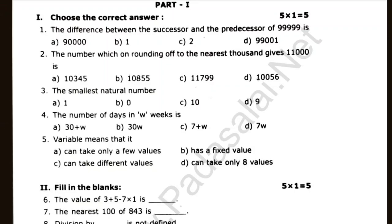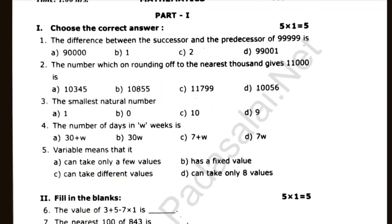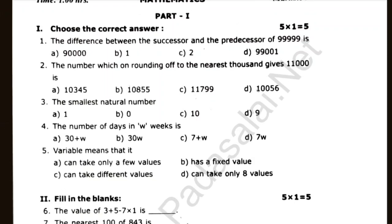Which rounding of the nearest thousand gives 11000? The smallest natural number. The number of days in 5 weeks is dash. Variable means that is dash. If you look at the book you can read the answer.